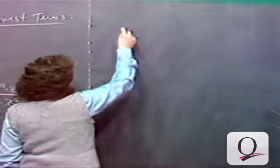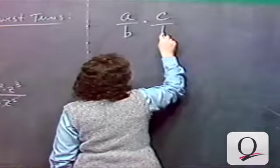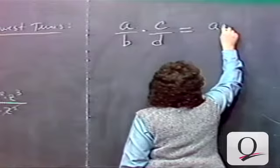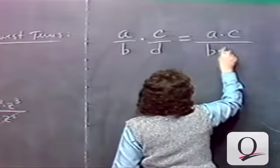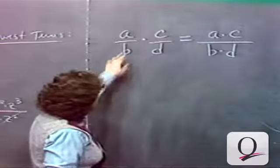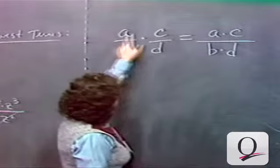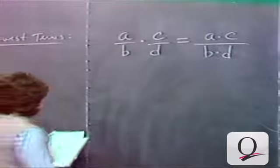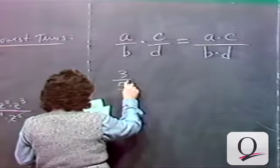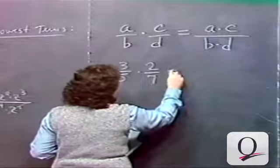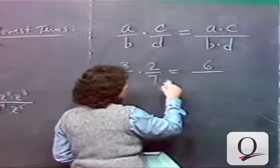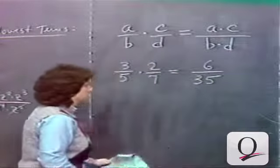When multiplying two fractions a over b times c over d, the rule is simply multiply the numerators and divide by the product of the denominators — assuming b and d are not zero. For example, 3 fifths times 2 sevenths gives 3 times 2 over 5 times 7, or 6 over 35.